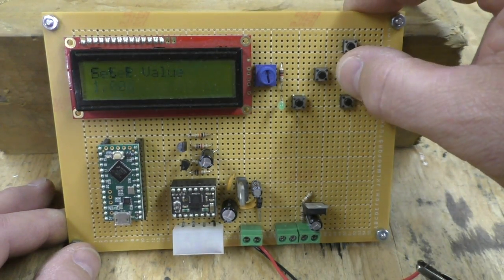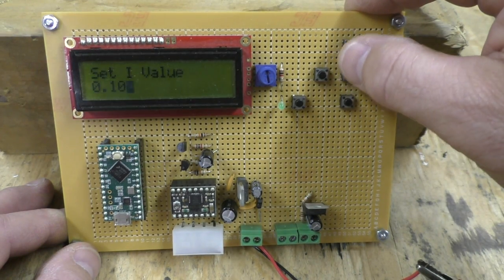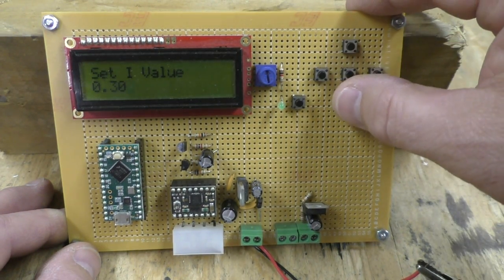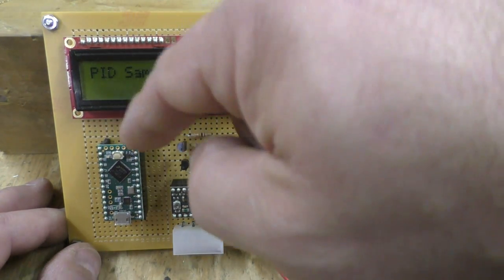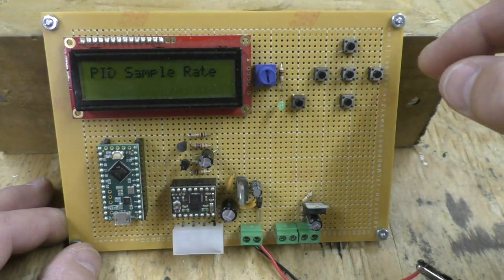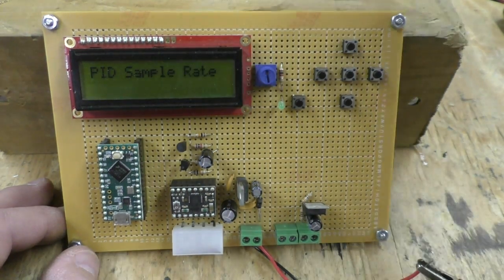I can change these values and you can change it on the fly while it's running. But these values can be changed and then when you save it, it saves it into the EEPROM on the Teensy. You can change all the PID parameters, you can change the sample rate of the PID.